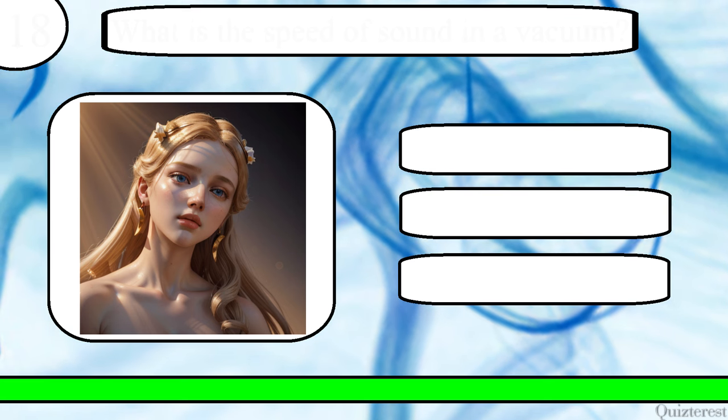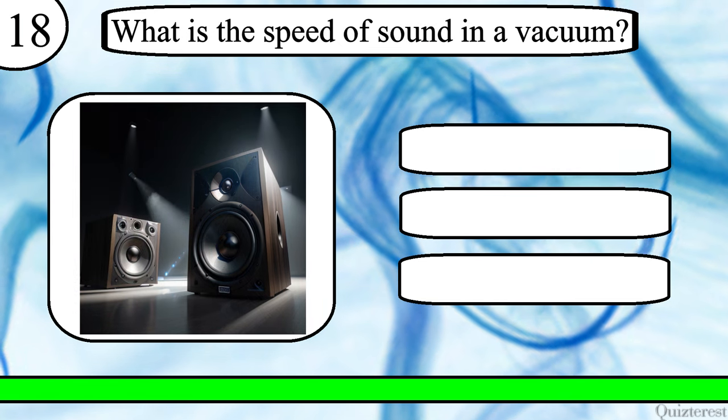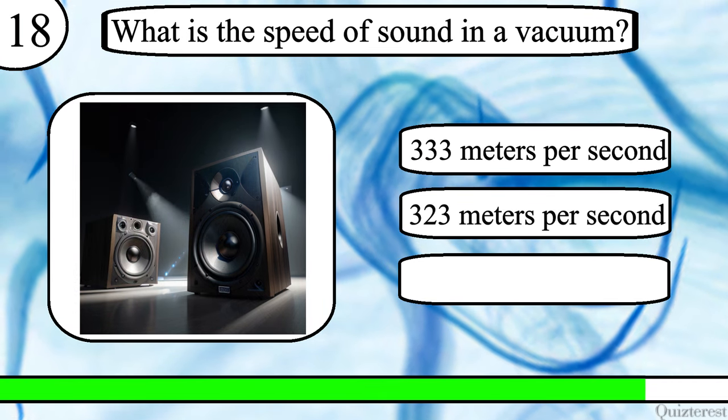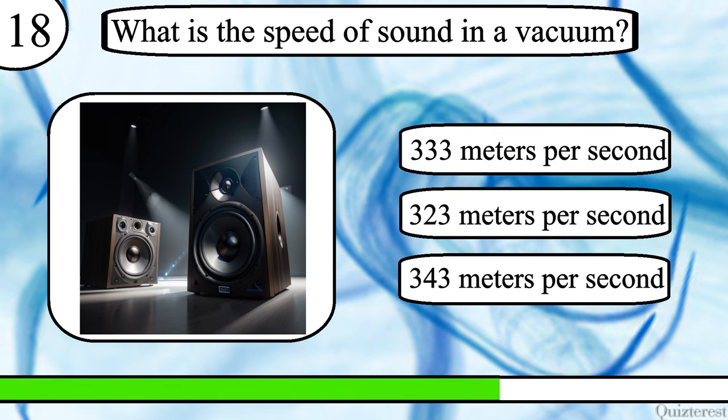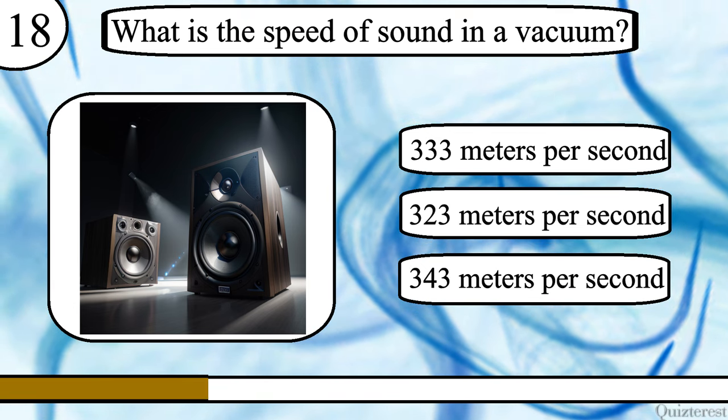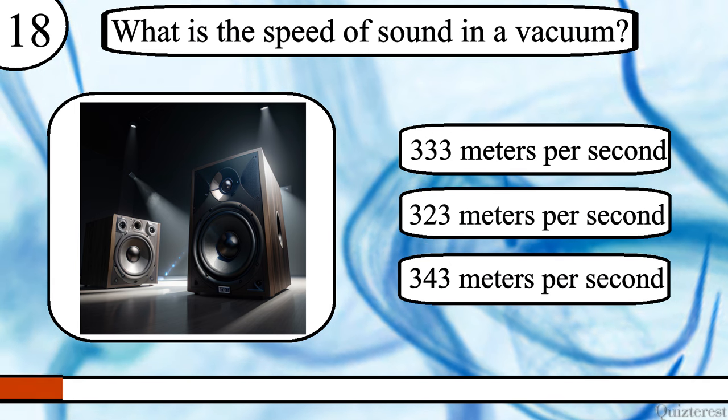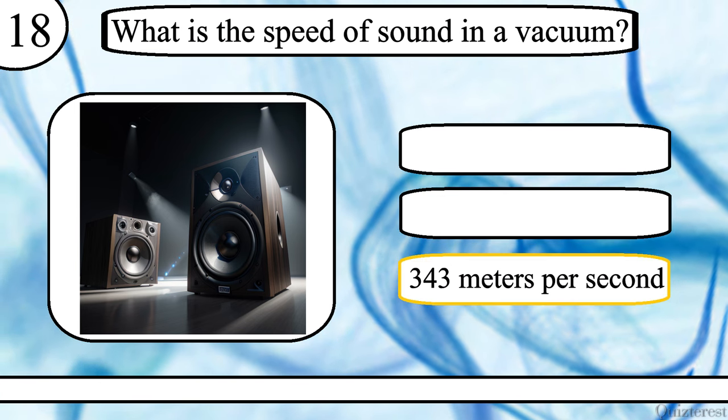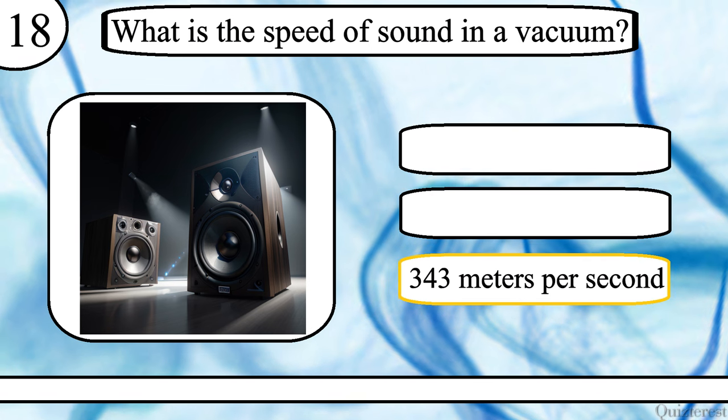Question 17. What is the speed of sound in a vacuum? 333 metres per second, 323 metres per second or 343 metres per second? The correct answer is 343 metres per second.